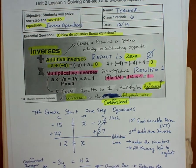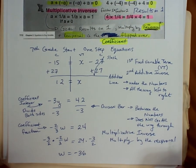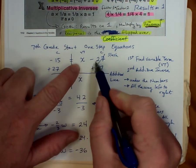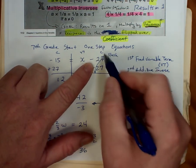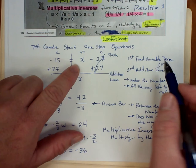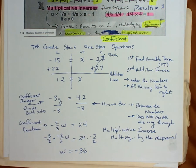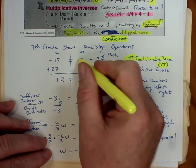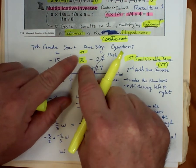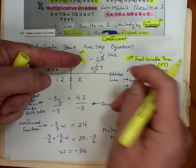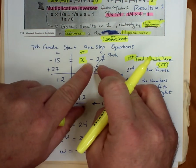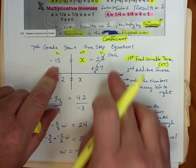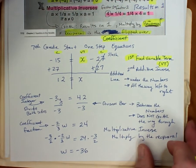Let's take a look at what these things look like in a one-step equation. We have a problem where it says negative 15 equals 1x minus 27. My goal is to isolate x, so first I need to find the variable term. I can see that x is my variable term — I put 'vt' above it — and it's on the right side. Over here is minus 27, which we call a constant, marked with a 'c'. On the left side, I also have a constant. So I'm going to apply the additive inverse.